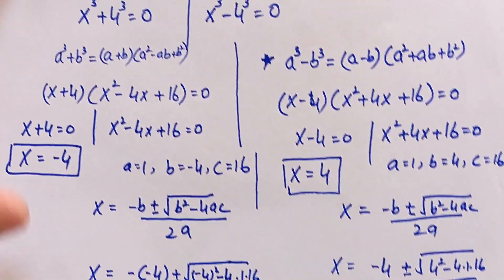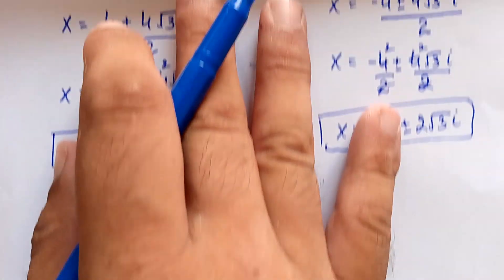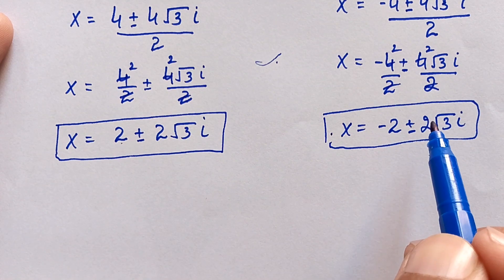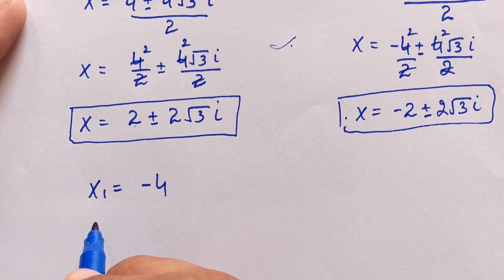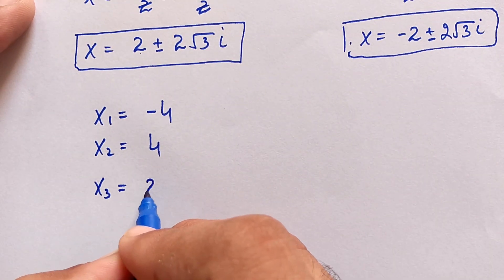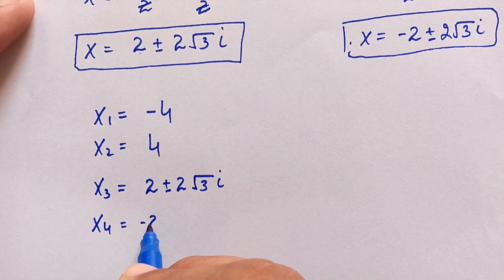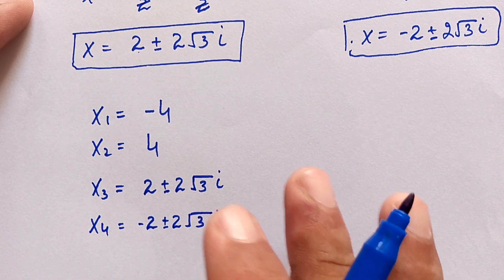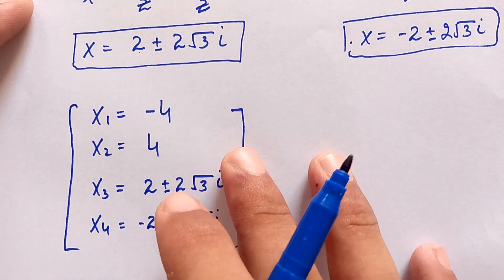In summary, the real solutions are x equals minus 4 and x equals 4, and the complex solutions are x equals 2 plus or minus 2 square root of 3 i, and x equals minus 2 plus or minus 2 square root of 3 i. So x₁ equals minus 4, x₂ equals plus 4, x₃ equals 2 plus or minus 2 square root of 3 i, and x₄ equals minus 2 plus or minus 2 square root of 3 i. These are all the possible values of x. Thank you for watching, please subscribe to the channel.